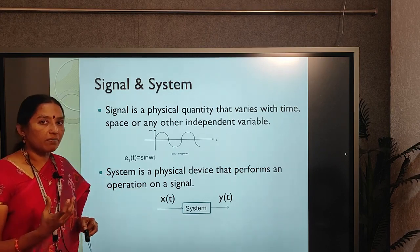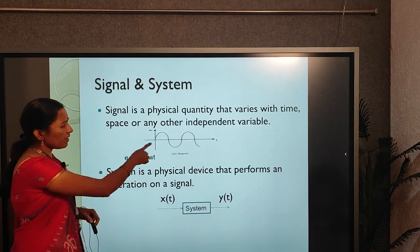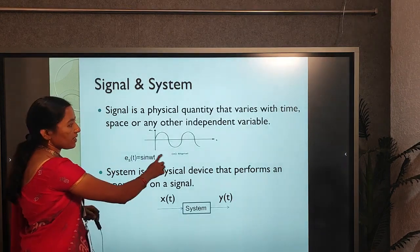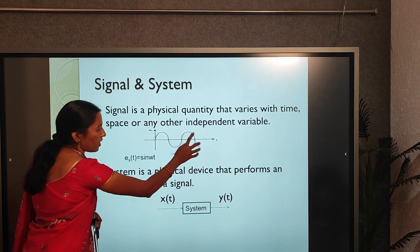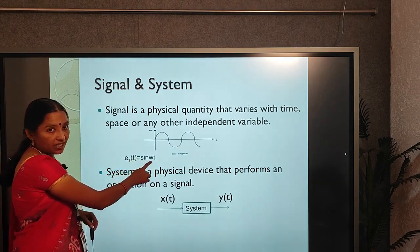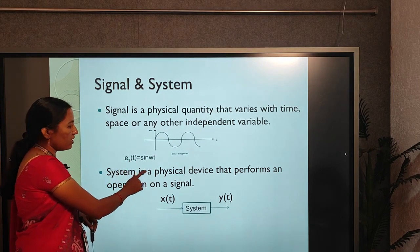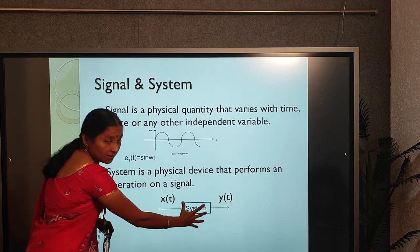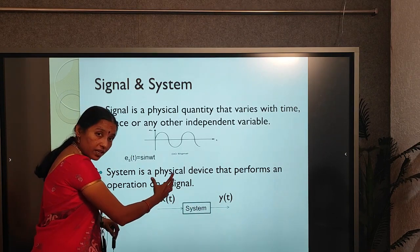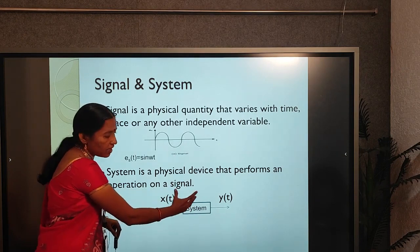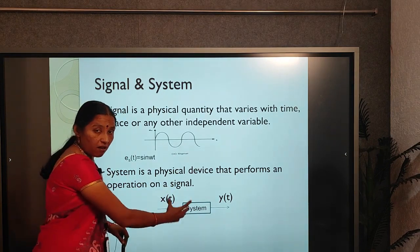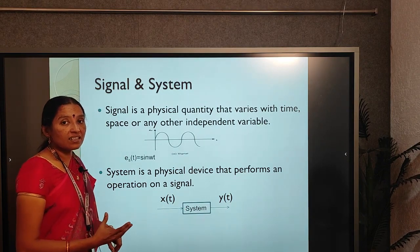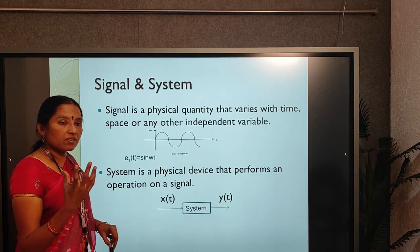A signal is content or information — a physical quantity that varies with time, space, or any other independent variable. A sinusoidal signal is one type of signal that continuously varies with time, represented mathematically as E_s(t) = sin(ωt), where t is the independent variable. A system can be used to process that signal: system takes an input signal and after processing produces an output. If the signal is analog, the processing is called analog signal processing. If it is a digital signal, the system is called a digital signal processing system.